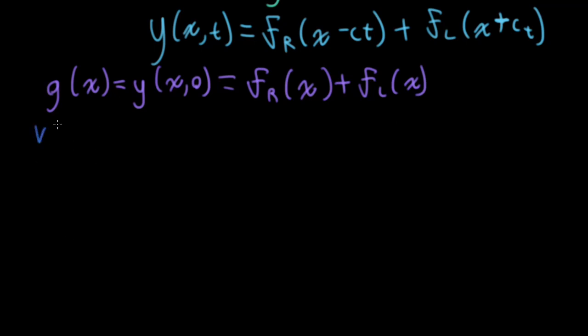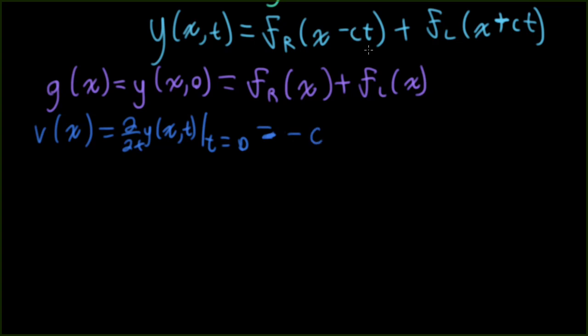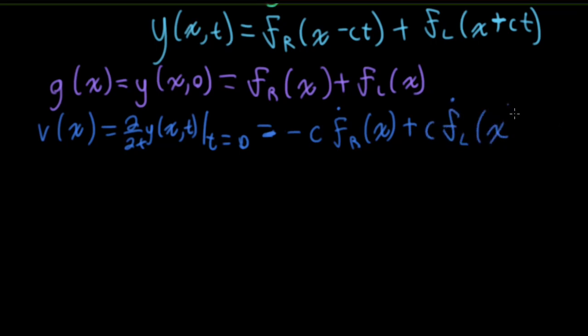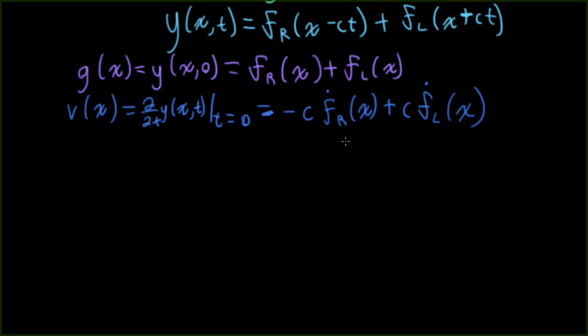We also defined the initial velocity of the string as being the derivative with respect to time evaluated at t equals zero. So I'll have a minus c in front from the chain rule, fr dot x, and I won't have a minus ct because I'm plugging in zero for t. And then from the chain rule on the second term, I'll have plus c flx. What I'm going to do now is integrate both sides of this equation because I really want to get rid of the dots here. So I'm going to integrate from some arbitrary point, I'm going to call it a, up to x. And here, let me put a tilde over the x to indicate it's a dummy variable of integration.